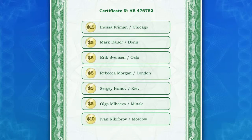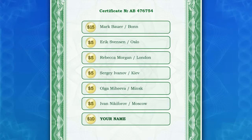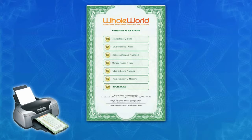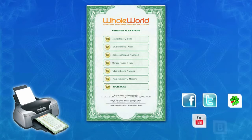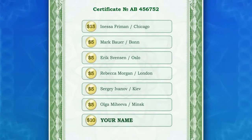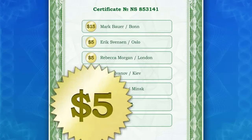The system issues your personal invitation certificate with your name on the bottom line. The other names are moved one line up in the queue. The certificate can be printed out and given to anyone as an invitation to the system. You'll also get a personalized link to the Whole World program which you can use to invite people online. Every time a new member uses your invitation certificate to register, you'll automatically get ten dollars added to your account since your name is on the bottom line of the queue.